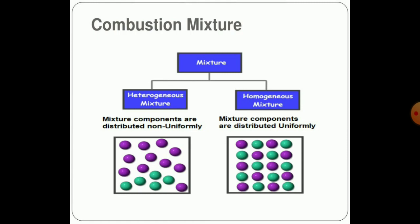The fuel used in an SI engine is a mixture of heterogeneous and homogeneous mixtures. A mixture whose components are distributed non-uniformly is called a heterogeneous mixture, while a mixture in which the components are distributed uniformly is called a homogeneous mixture.